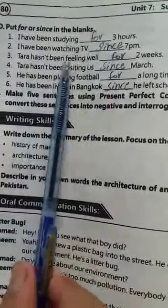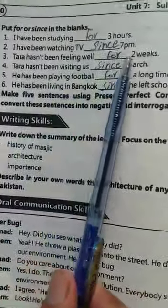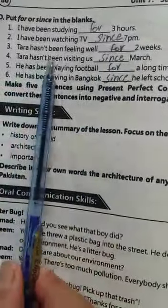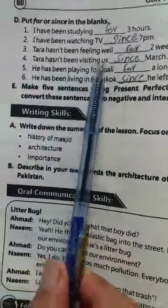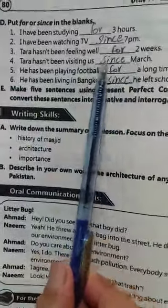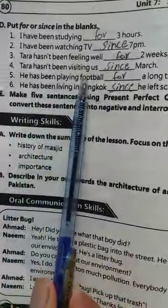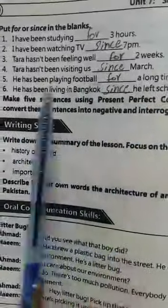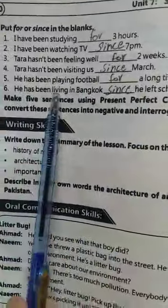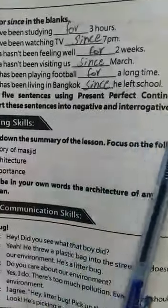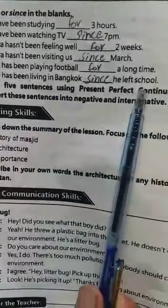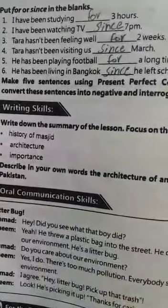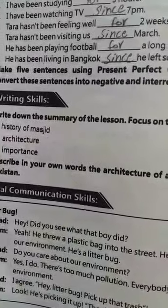'Tara hasn't been feeling well ___ 2 weeks' — 2 weeks آ گیا، 'for' لگے گا۔ 'Tara hasn't been visiting us ___ March' — March آیا، 'since' لگے گا۔ 'He has been playing football ___ a long time' — 'for a long time.' 'He has been living in Bangkok since he left school.'